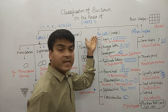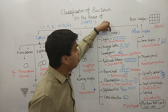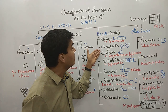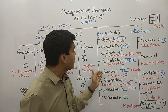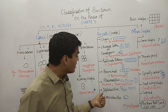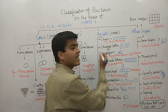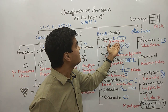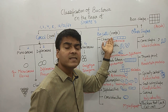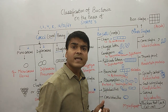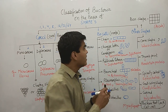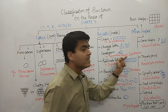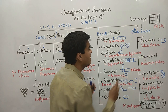Bacilli are rod-shaped bacteria. Their arrangements include chain shape, Chinese letter shape (also called cuneiform), palisade pattern, branch pattern, filamentous, pleomorphic, diplobacillus, and cocobacillus. Chain-shaped bacilli are similar to streptococcus but rod-shaped — the example is Bacillus anthracis. Chinese letter or cuneiform shape looks like V-shaped or various angled rods — the example is Corynebacterium diphtheriae.